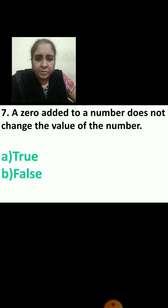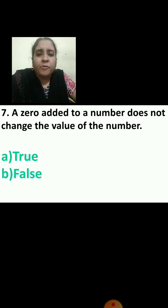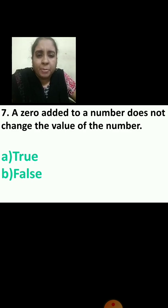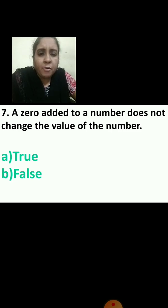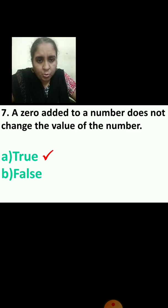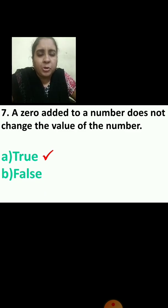Now the 7th question: if we say 5 plus 0 equals 5, does it change the value of the number? No. So it is true or false? Your correct answer is true — a 0 added to a number does not change the value of the number, so your answer should be true.